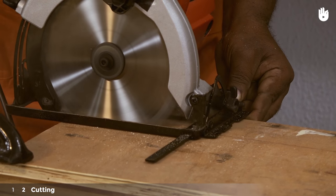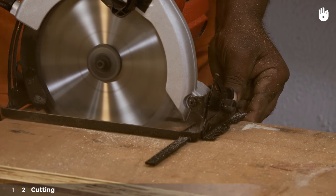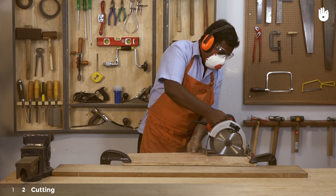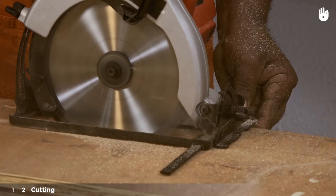Use your non-dominant hand to hold the rip fence flat against the workpiece. Apply steady pressure to avoid having the saw bounce up or lose course.